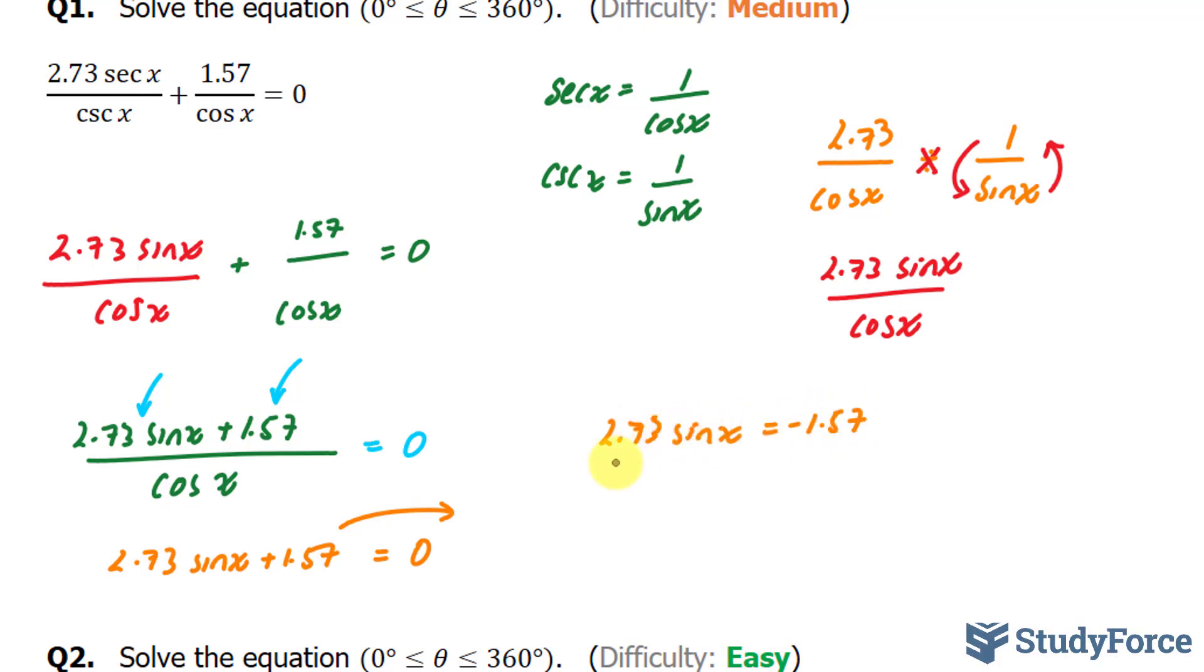Next, I'll attempt to solve for my x. First we need to get rid of this denominator. And we can do that by multiplying both sides by cosine x. If I multiply this whole term by cosine x and this right side by cosine x, I end up with simply 2.73 sine x plus 1.57 is equal to zero. The cosine x disappears, goes away. I'll bring this 1.57 to the right side where I end up with 2.73 sine x is equal to negative 1.57. Dividing both sides by 2.73, this will cancel out.